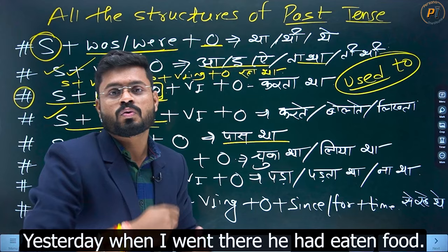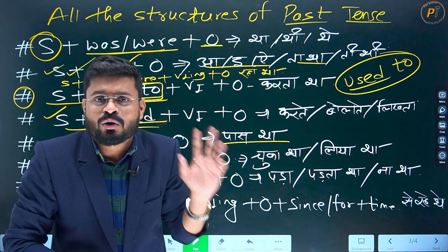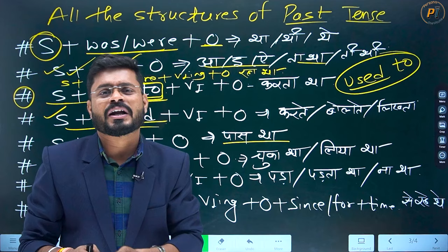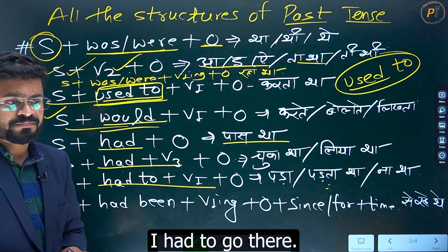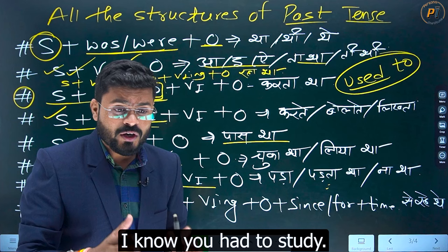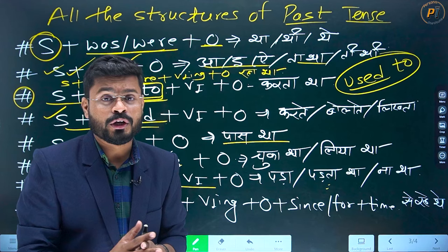Toh koi kaam past mein pehle ho gaya tha, tab aapko 'had' use karna hai. Aur students ko galat padaya jaata hai — sabse badi problem yeh bhi hai. Iske baad jo kaam aapko karna pada — 'had to' copy karo. Jaise: mujhe wahaan jaana pada — I had to go there. Aapko padna pada — I know you had to study very hard to score good marks. You had to work hard to score good marks. Sab ko hi karna pada — and everybody had to.